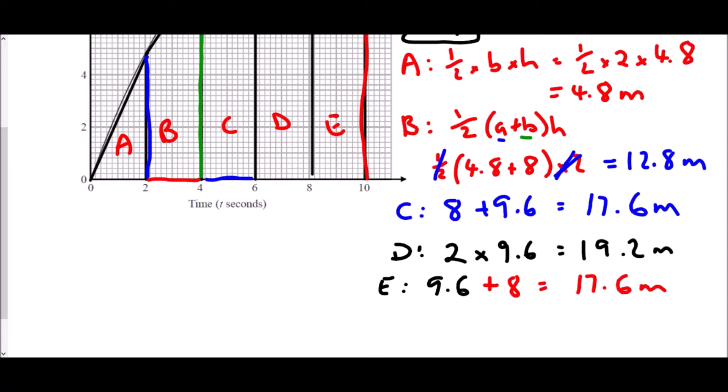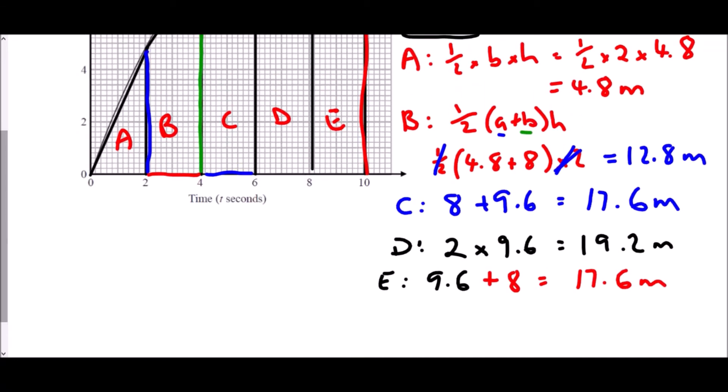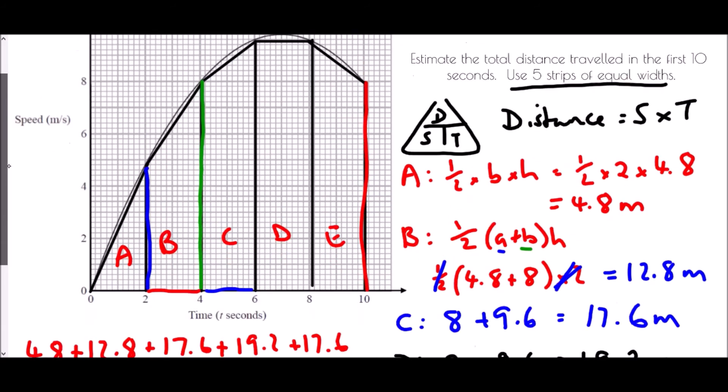And if we want to find the total distance travelled, well, all we need to do is add together each of those distances. So 4.8 plus 12.8 plus 17.6 plus 19.2 plus 17.6. If we add them all together, we get 72 metres. And so over the course of those 10 seconds, we travelled 72 metres.